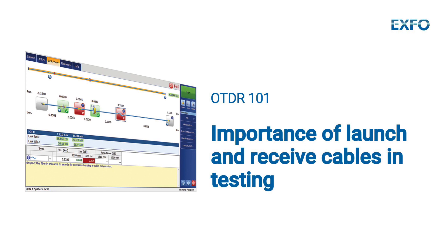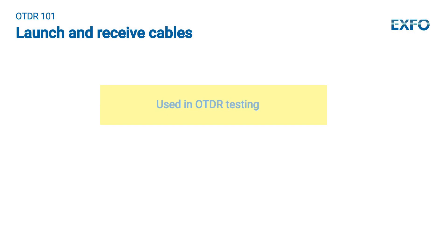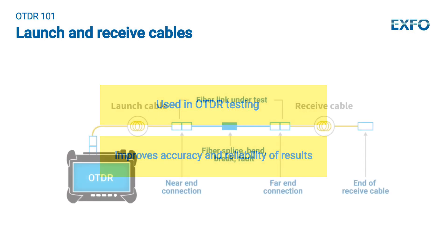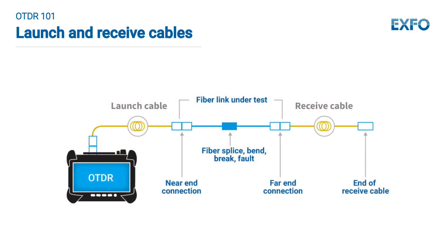This tutorial will explain the importance of launch and receive cables in OTDR testing. Launch and receive cables are used in optical time domain reflectometer (OTDR) testing to improve the accuracy and reliability of test results. A launch cable is a fiber optic cable connected to the OTDR at the near-end connection, and a receive cable is connected at the far-end connection. Both are typically made of the same type of fiber as the fiber being tested.